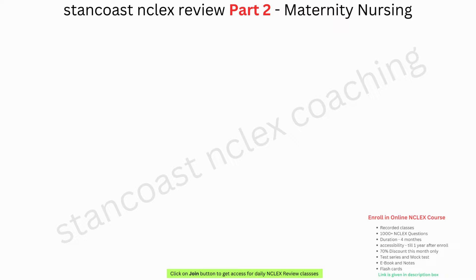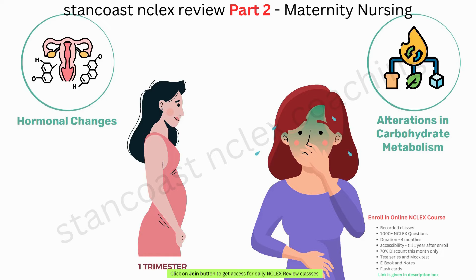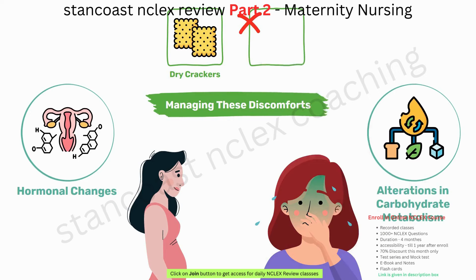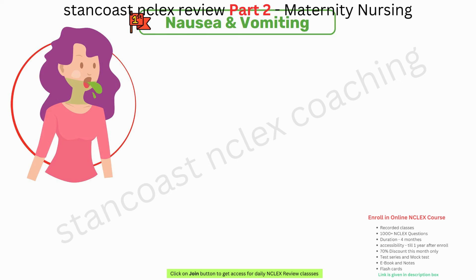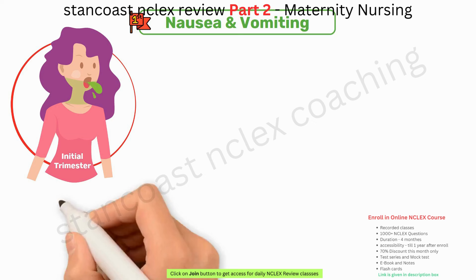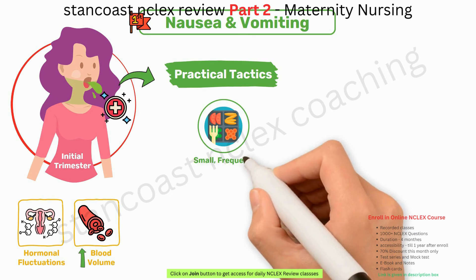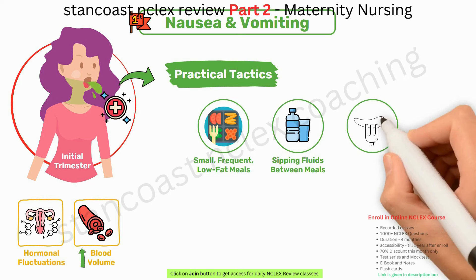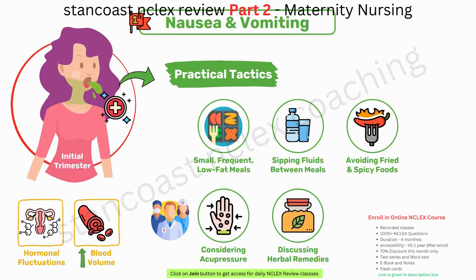Pregnancy often brings discomforts like nausea and vomiting in the first trimester, driven by hormonal changes and alterations in carbohydrate metabolism. To find relief, expecting mothers are encouraged to opt for small, frequent, low-fat meals throughout the day; sip fluids between meals rather than during; avoid fried and spicy foods; consider acupuncture; discuss herbal remedies with their healthcare provider; and when appropriate, take prescribed anti-emetic medications.